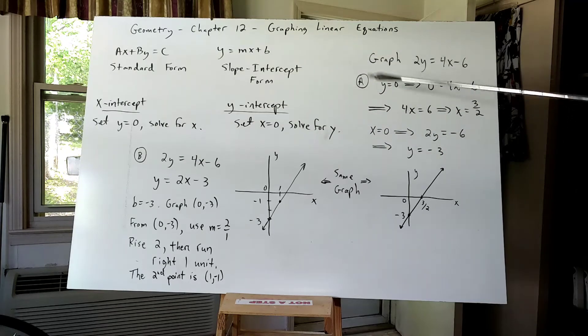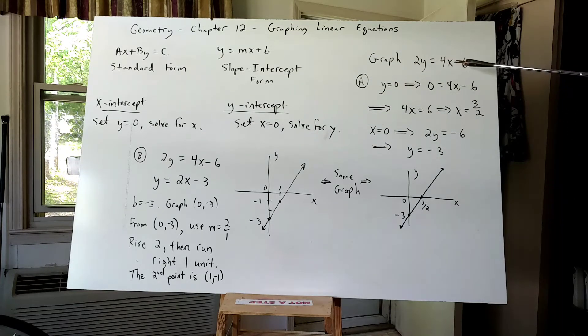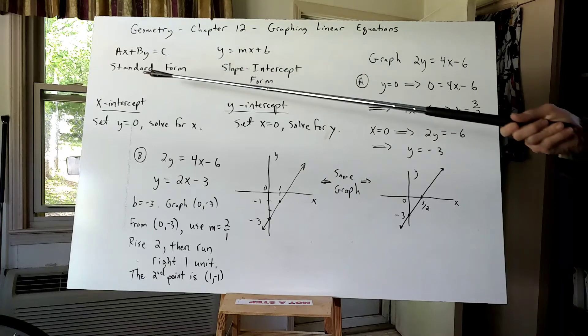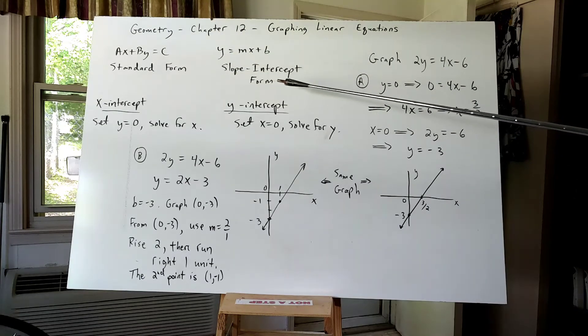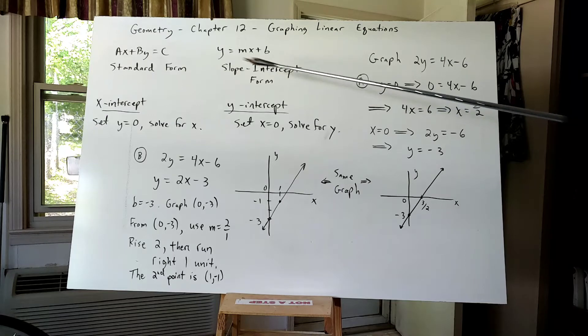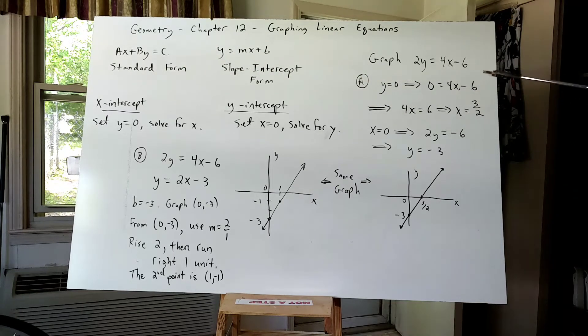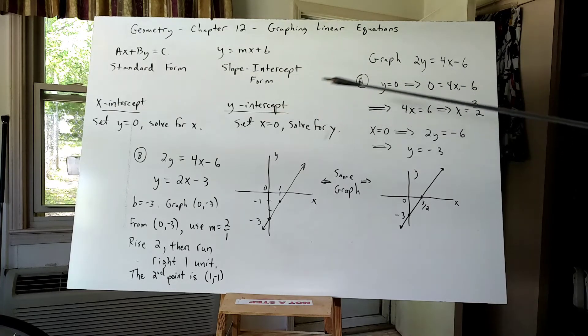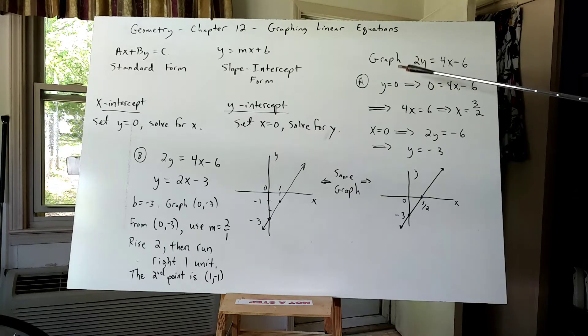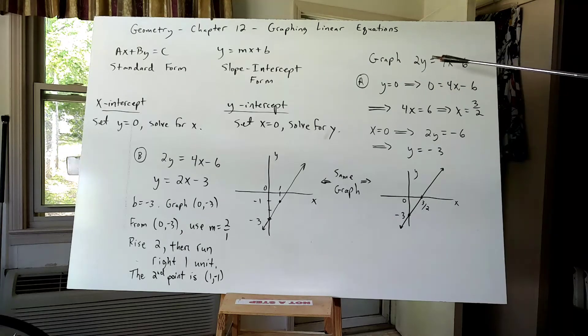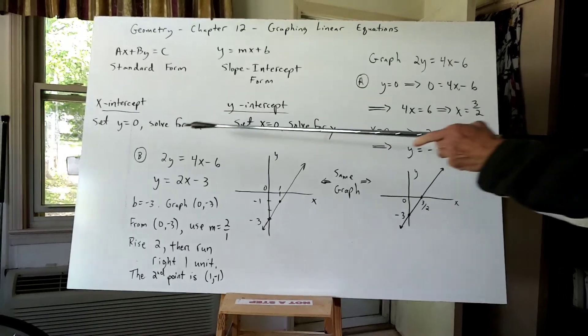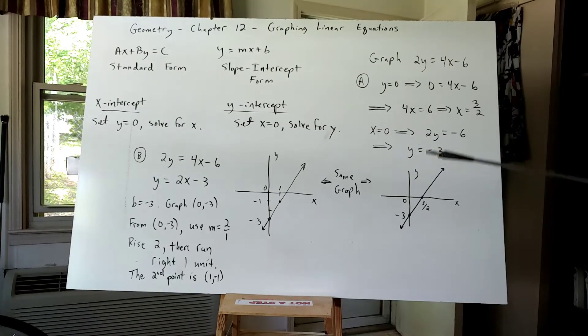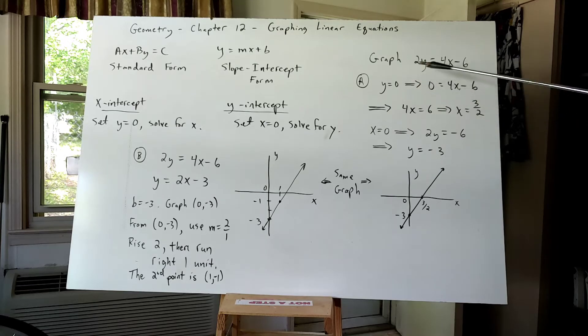So come over here to part A and we're going to graph 2Y equals 4X minus 6. Notice it's in neither standard form nor slope intercept form. It is closer to one of them than the other in its present form, but it can be changed to either of these two forms. I will begin part A graphing this equation by using the intercepts, the X and the Y intercept.